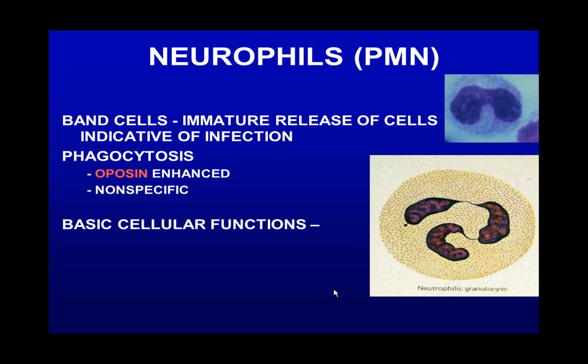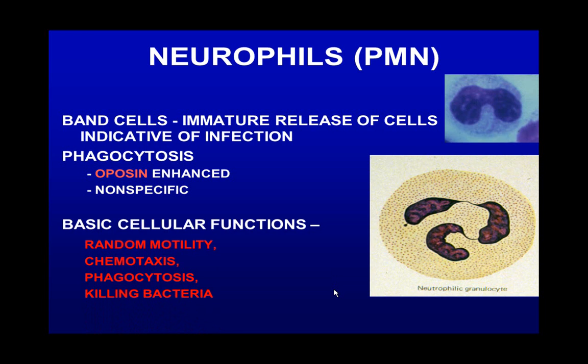Neutrophils have basic cellular functions. Random motility — they move in every different direction; they're produced in the bone marrow and have to randomize their movement to migrate out. Chemotaxis is where they move toward a chemical concentration stimulus — directed movement.